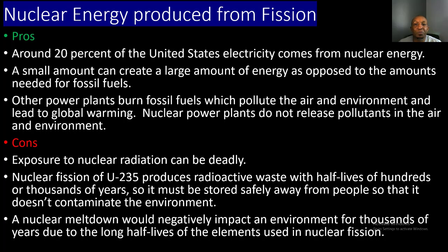Now let's look at the pros and cons of nuclear energy produced by fission reactions. For pros: around 20 percent of the United States' electricity comes from nuclear energy; a small amount of fuel can create a large amount of energy compared to fossil fuels; and unlike other power plants burning fossil fuels — which pollute the air and contribute to global warming — nuclear power plants do not release pollutants into the air and environment, making them a much cleaner source of energy.